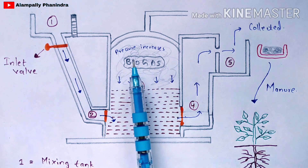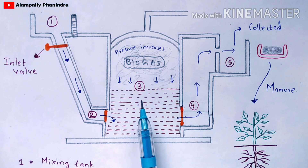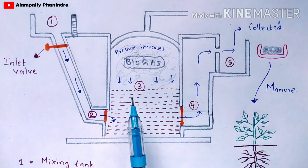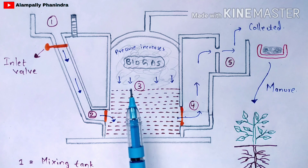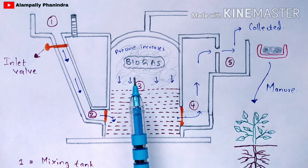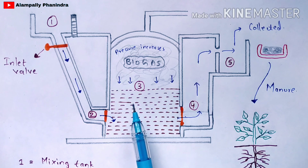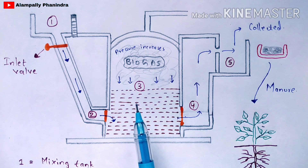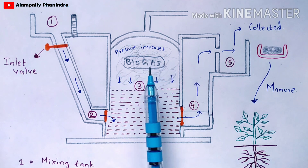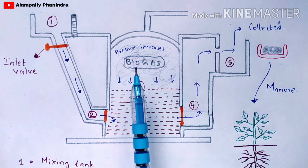Leave the digester tank for two months. During this two-month period, the methanobacterium (methanogens) present in the slurry decompose in the water. The cow dung plays a major role here, as the methanogen bacteria are present in it. These bacteria completely decompose in the water, releasing gas. This gas fills the upper portion of the digester tank over the two months.